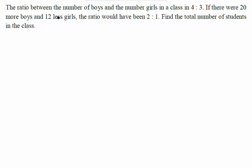Okay, so in this question, it is given to us that the ratio between the number of boys and the number of girls in a class is 4 is to 3. So let us start writing - boys and girls. The ratio in this class is 4 is to 3, boys is to girls.